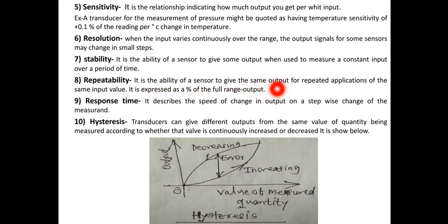Of the same input value. That means if we measure the particular theme every time we get the same value, same result. That is nothing but repeatability. It is expressed as percentage of full range output.